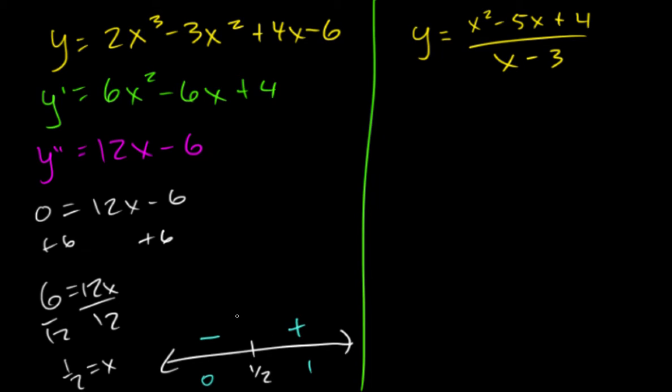Remember, this is the second derivative. So this is going to correspond to concave down. This is concave up. When x is greater than or equal to 1 half, we're concave up. When x is less than or equal to 1 half, we're concave down.